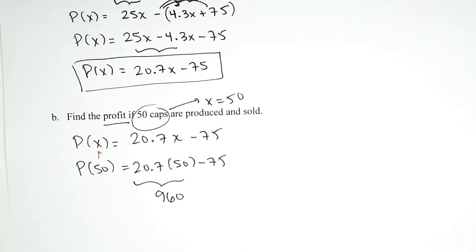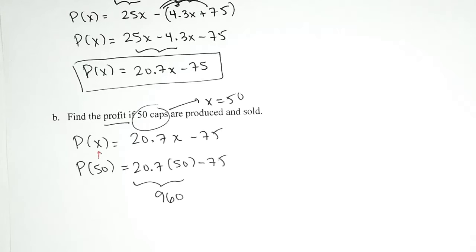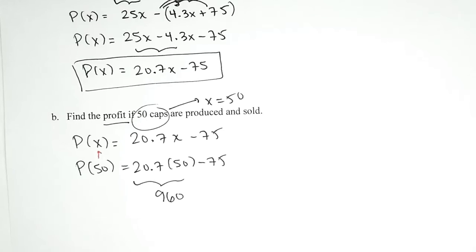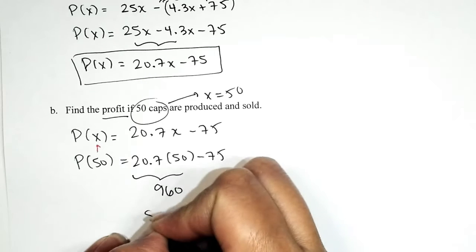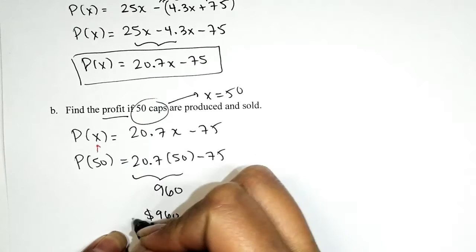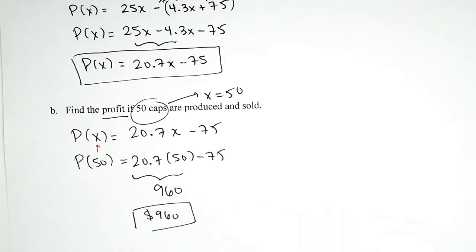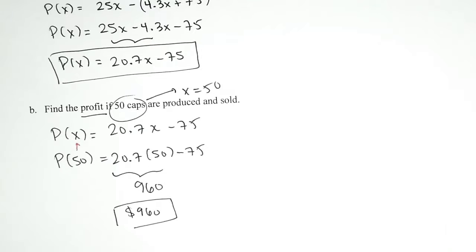The problem didn't require us to write the answer in a sentence, so I'll take that green light. But that doesn't mean we're exempt from including the units. We want to know the profit for 50 caps produced and sold, and the answer is 960 dollars.